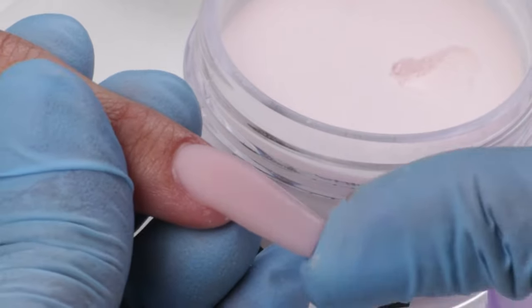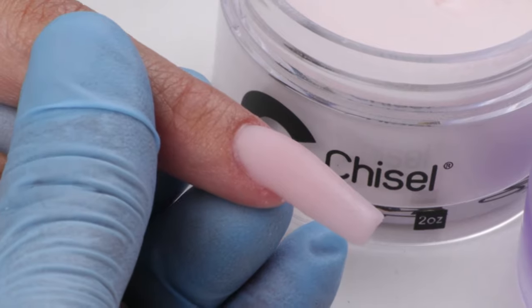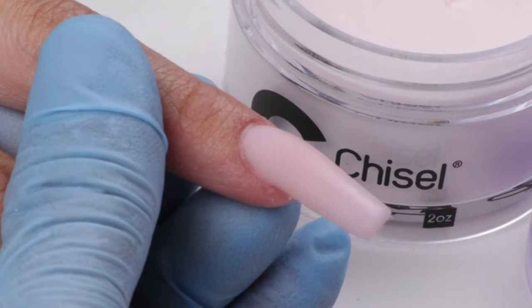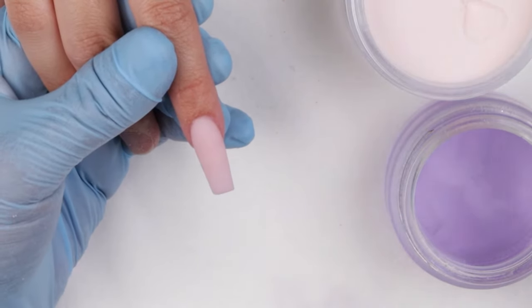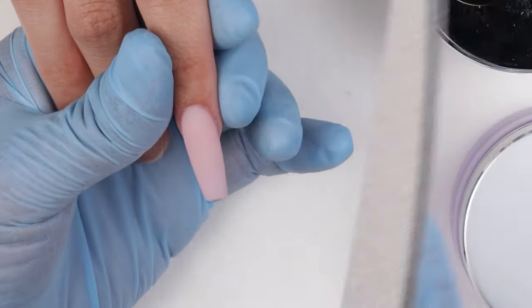And now what I'm going to do is continue to the next nail. Right now I'm waiting for the nail to dry so I can start filing the shape. As you can see the application is finished and the nail is dry.